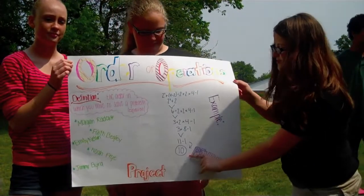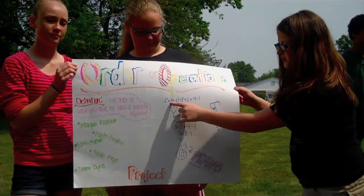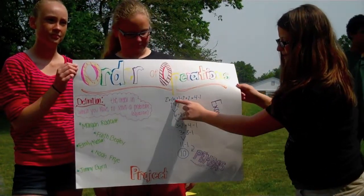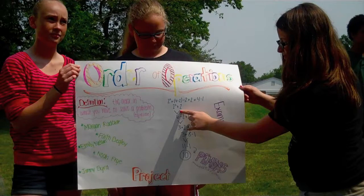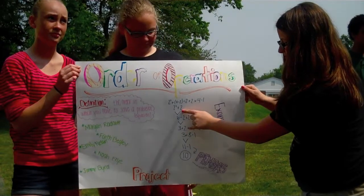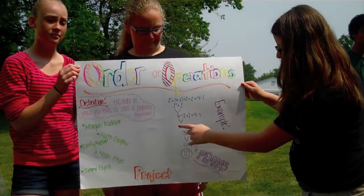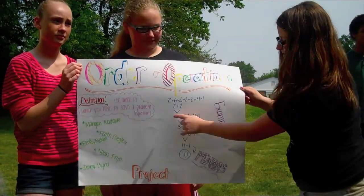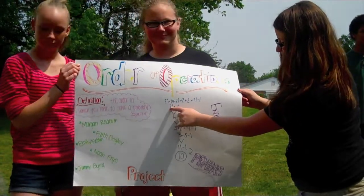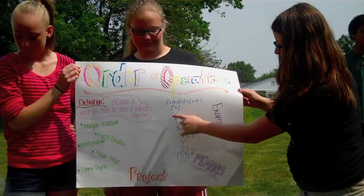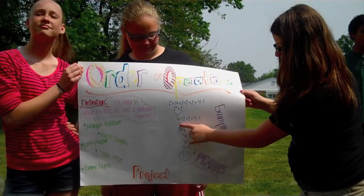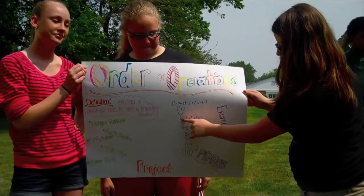First is P — parentheses — so you would do 4 minus 2, which is 2. Then you would do E — exponents — so you would do 2 squared plus 2, which is 6.